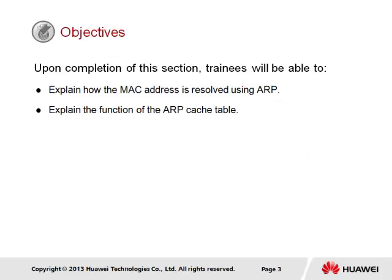Upon completion of this section, it is generally expected that trainees will be able to explain how the MAC address is resolved using ARP, and explain the function of the ARP cache table.